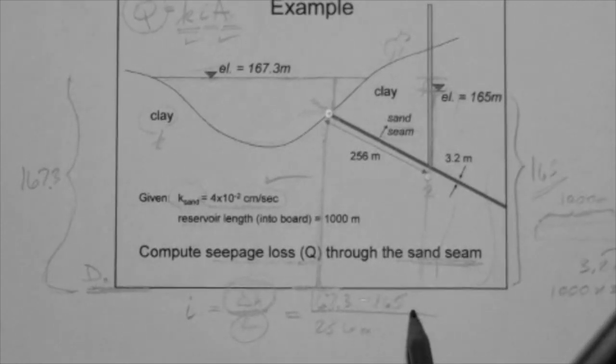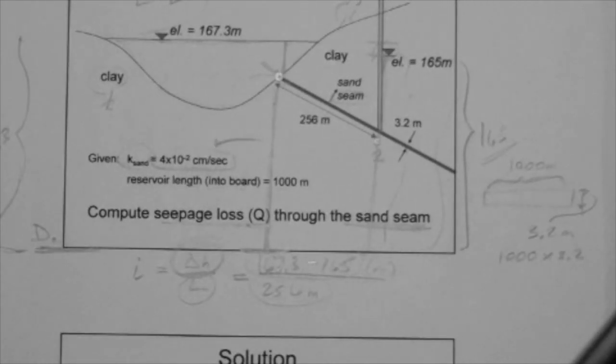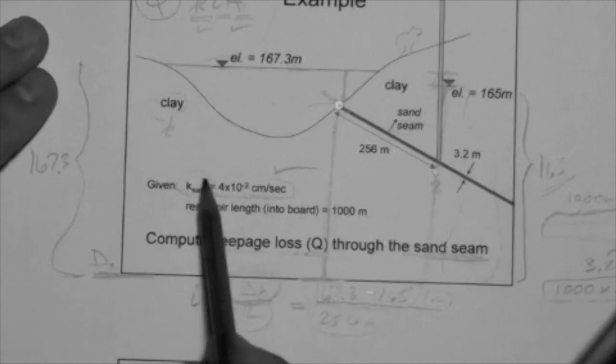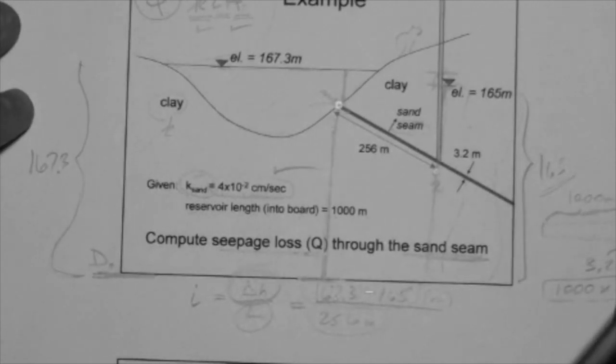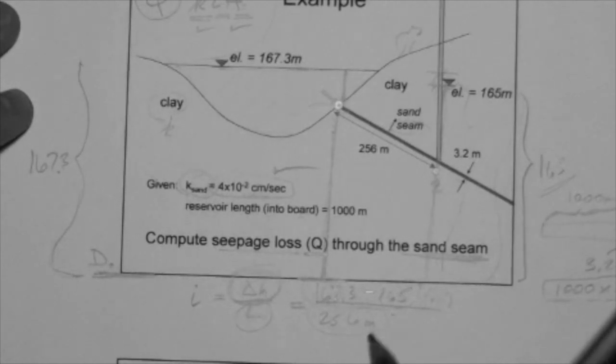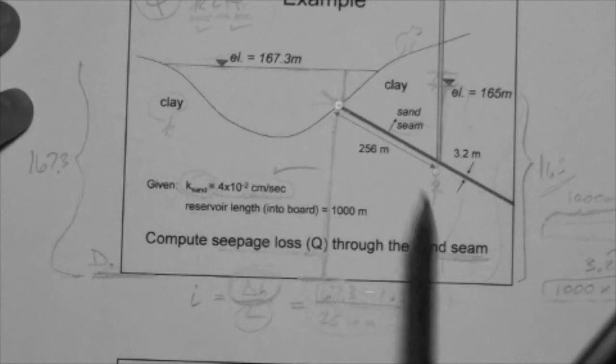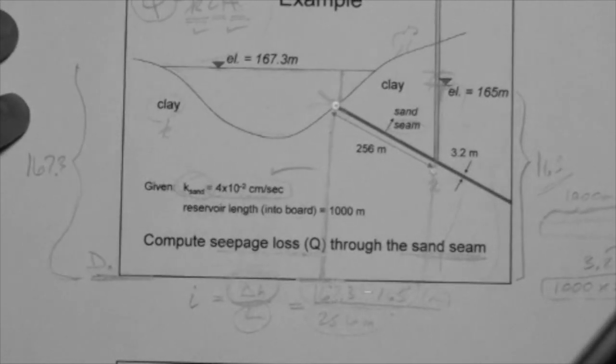So now we have, this is in meters. Now we have delta H, L, we have the area. And we have K, which is this. Now, this is in meters squared. This is in meters. Actually, these meters cancel. But this K is in centimeters per second. You have to convert this to meters. Make sure that all the units are consistent. The only place where you don't have to have consistent units is when you compute or when you use Hazen's correlation.